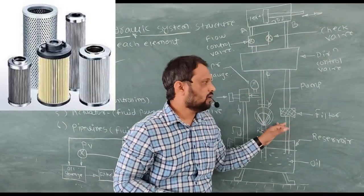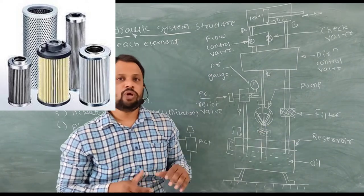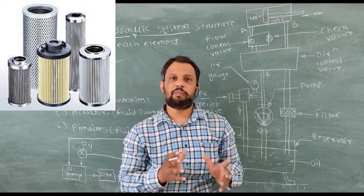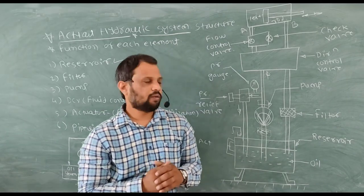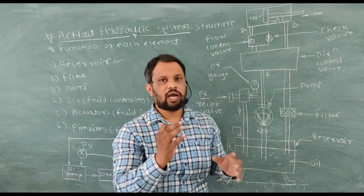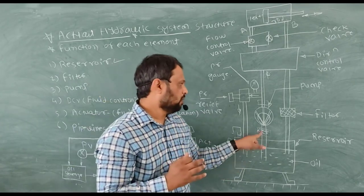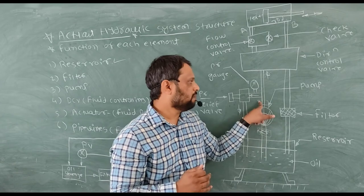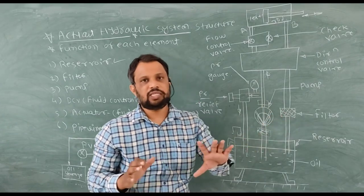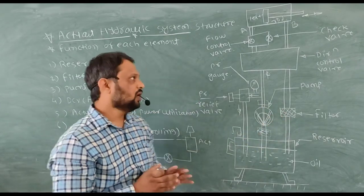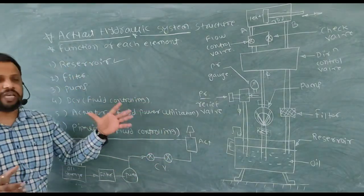At the end there is a filter. The main function of the filter is to remove contaminants or metal particles. The location of the filter can be at three different positions: before the pump, after the pump, or in the return line. But the function is the same. This is the function of each element: reservoir, filter, pump, DCV, fluid controlling, actuator, fluid power utilization, and pipeline.